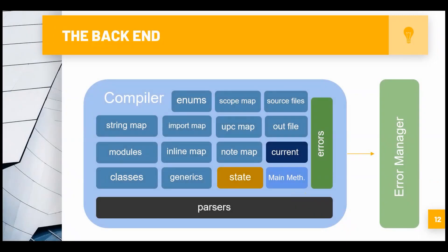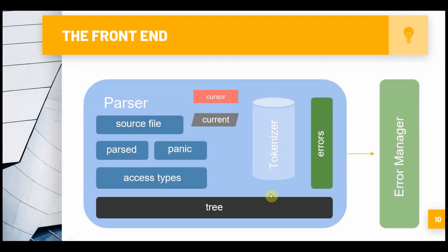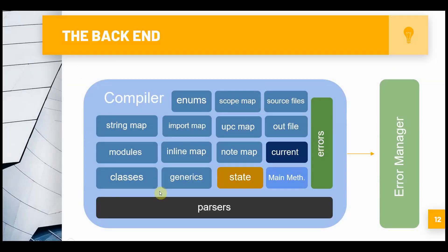Our compiler is pretty complicated - I actually couldn't fit everything in here. Of course, we have our error management system and our list of parsers. Every parser has a parsed flag. As we're compiling our code and compiling every single file, if any parser in the list is not parsed correctly and that parsed flag is set to false, then we just won't process it. After that, we have a bunch of different maps: our enums map - a list of all enum classes created - and our string map for any string literals, just a list of strings.